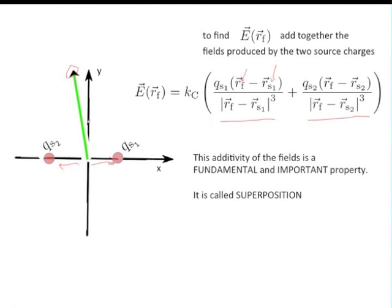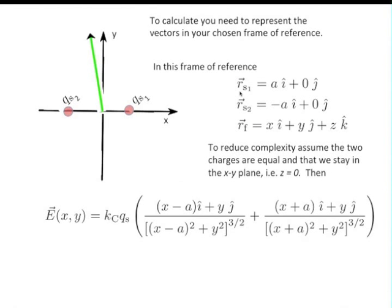And the y-axis lies in the plane of bilateral symmetry or reflection symmetry. So, here we are putting in a representation of the coordinates. And in this frame of reference, r_s1 is just a times i-hat. r_s2 is minus a times i-hat. The two charges are spaced by a distance of 2a. And we reduce complexity by assuming the charges are equal. And that we're only going to look at the field in the x-y-plane. That is, for z equals zero.